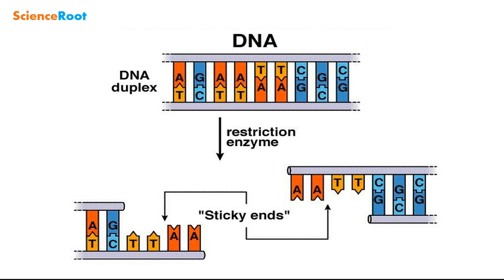Restriction enzymes are used for the cutting of the DNA into fragments. These restriction enzymes are isolated from different strains of bacteria. They are called restriction enzymes because they only cut the DNA at a specific site called the restriction site.